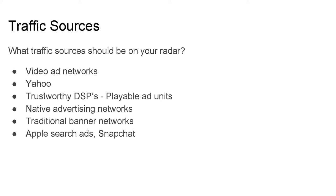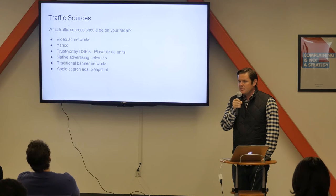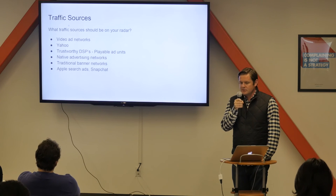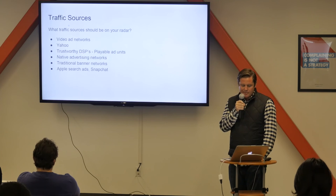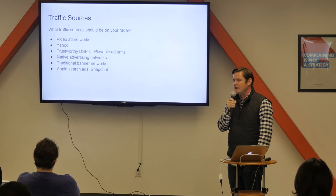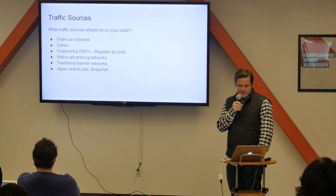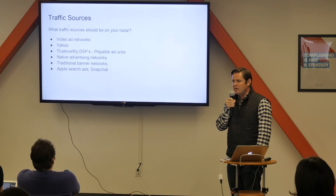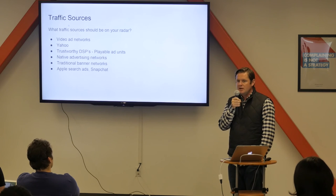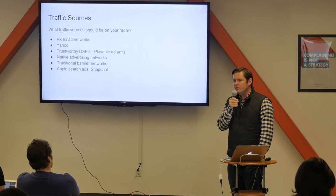Traditional banner networks like Millennial Media and Mobi are great options if you're trying to scale as well. Then the up-and-comers to look for: Apple Search Ads and Snapchat. Those are both new but I think they probably have more potential than everything else on the list outside of Facebook and Google. The bigger advertisers are in their betas, so talk to them and see how their campaigns are doing. If they are working, it's worth jumping in early because that's typically where all the arbitrage is.